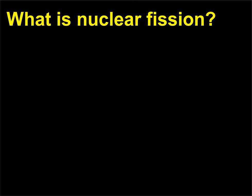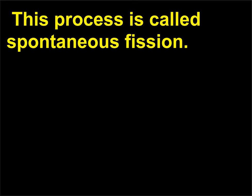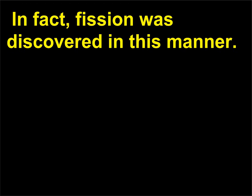What is nuclear fission? Radioactive nuclei can decay in another way — they can split in two. This process is called spontaneous fission. Fission can also be produced artificially by bombarding nuclei with low-energy neutrons. In fact, fission was discovered in this manner.